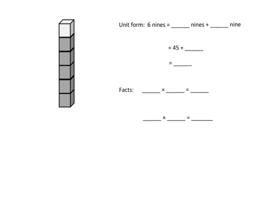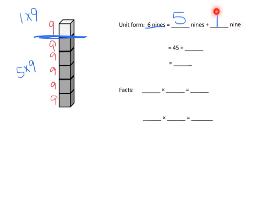The second part of the same question shows six nines. The visual breaks them into a group of five nines and one more nine — so instead of doing six nines all at once, we do five nines plus one additional nine. We already know five nines is 45 from the previous problem, so five nines equals 45 plus one extra nine.